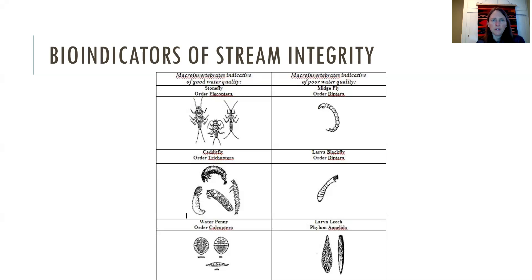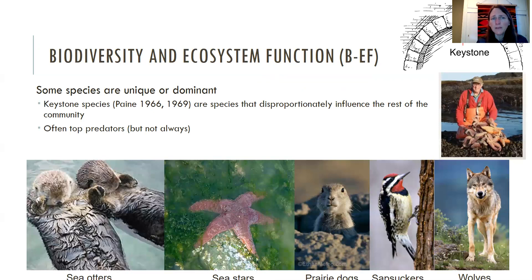Many aquatic organisms are indicators of stream integrity. The invertebrates shown on the left are indicators of good water quality, while those on the right indicate poor water quality. You can use the assemblages of communities in streams to tell something about the integrity or the polluted nature of a system.